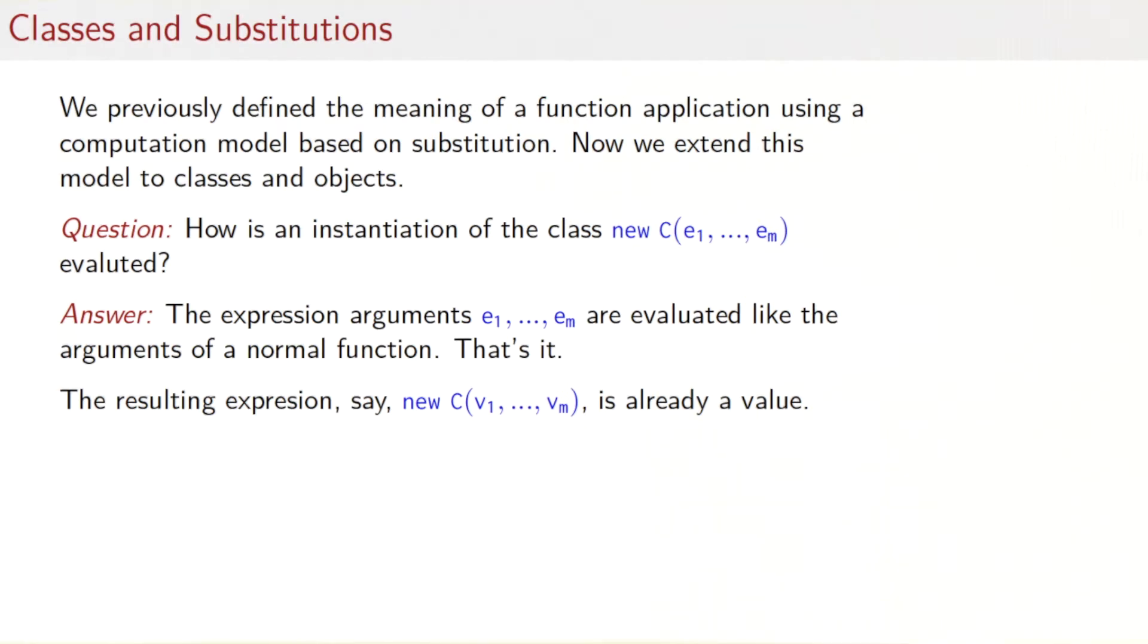The first question we need to ask is, how is an instantiation of a class like new C with some argument expressions evaluated? The answer is surprisingly simple. We will evaluate the expression arguments, e1 to em, just like the arguments of a normal function. The resulting expression, new C of some values v1 to vm, is already a value.